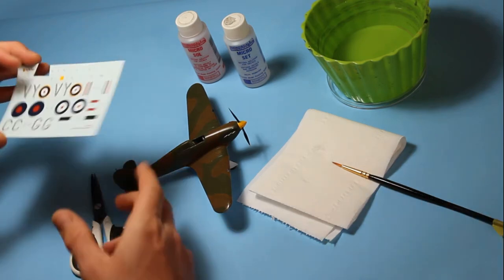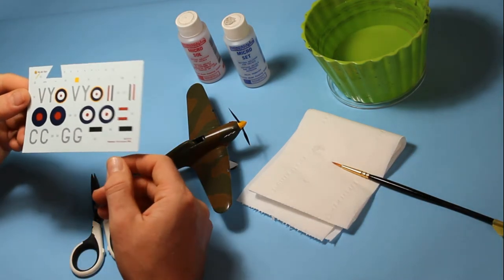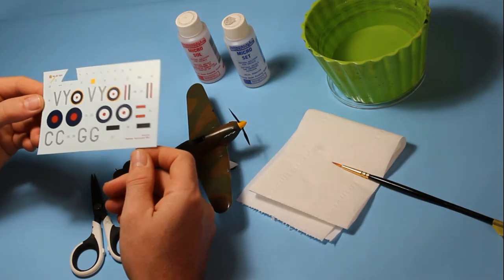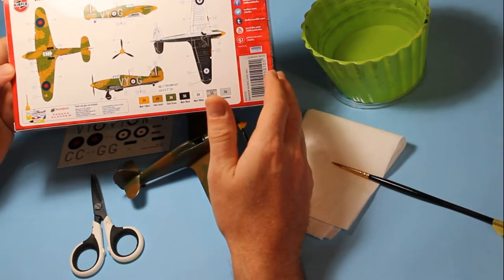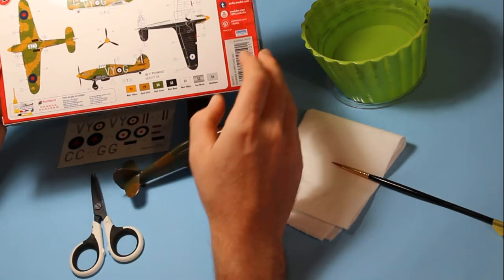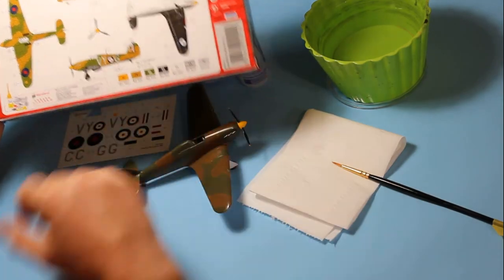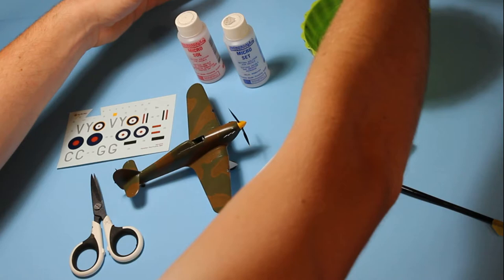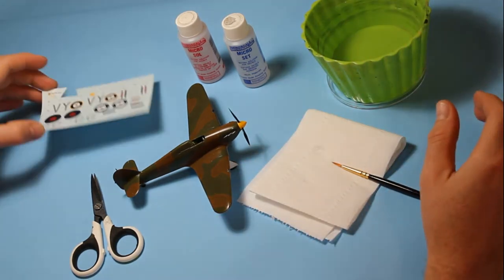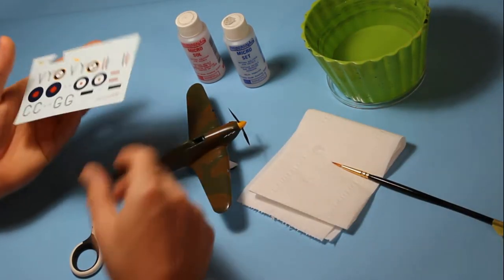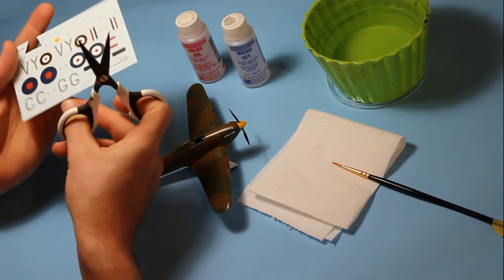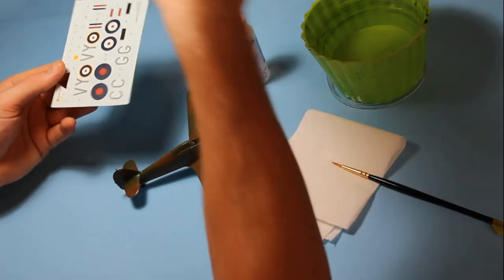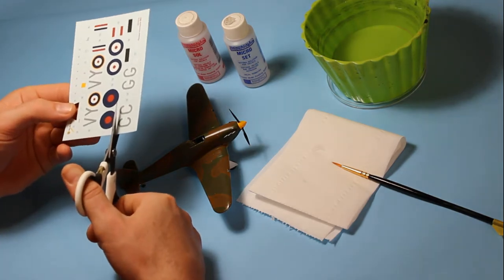We're moving on to the decaling now. We've got the information on the back of the box to follow for decal placement. You follow the numbers, cut them out. I'm going to start with the roundels. I like to start with the larger stuff and then work down into the stencils.